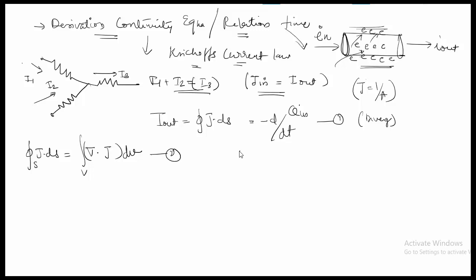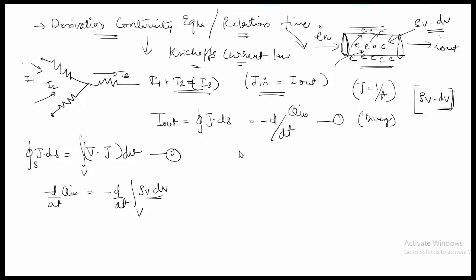Applying the divergence theorem, the surface integral of J dot dS equals the volume integral of del dot J dv. This is the second equation. The d/dt of q_in equals minus d/dt of the volume integral of ρv dv, since the charge equals the volume charge density times the differential volume.